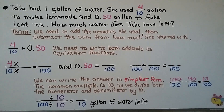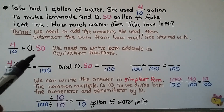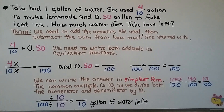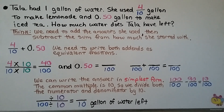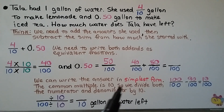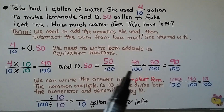Tala had 1 gallon of water. She used 4 tenths gallon to make lemonade and 50 hundredths gallon to make iced tea. How much water does Tala have left? We need to add the amounts she used, then subtract the sum from how much she started with. We have 4 tenths plus 50 hundredths. We need to write 4 tenths with a denominator of 100 by multiplying by 10, giving us 40 hundredths. We write the decimal 50 hundredths as the fraction 50 hundredths. Now we add 40 hundredths and 50 hundredths, which equals 90 hundredths.